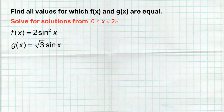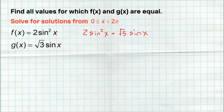Here's another one with a slightly different setup that you might see on the AP exam. We're asked to find all values for which f(x) and g(x) are equal. So we set them equal to each other and solve. We want to factor, but we can't factor unless we get everything on one side with zero on the other. Typically we want the squared value to be positive, so we move the radical three to the other side: two sine squared of x minus radical three sine of x equals zero.